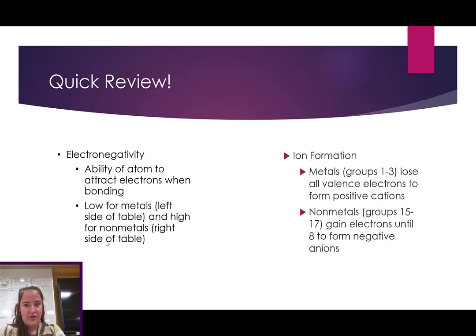We will also review ion formation. Metals, the ones in groups 1 through 3, 3 being 13 without aluminum, will lose all of their valence electrons, dropping down an energy level to form positive cations. And nonmetals, those elements in groups 15 to 17, will gain electrons until they have 8, forming negative anions.